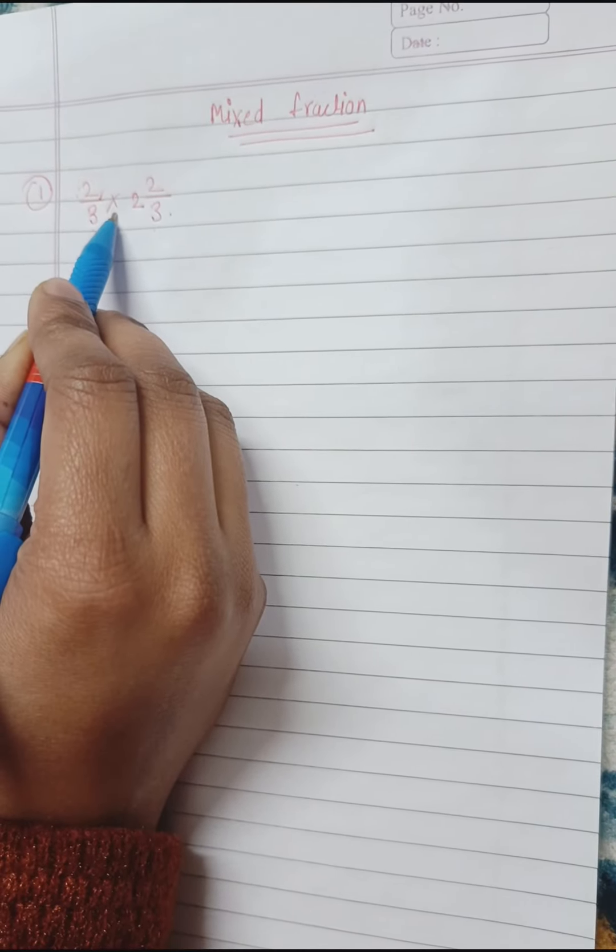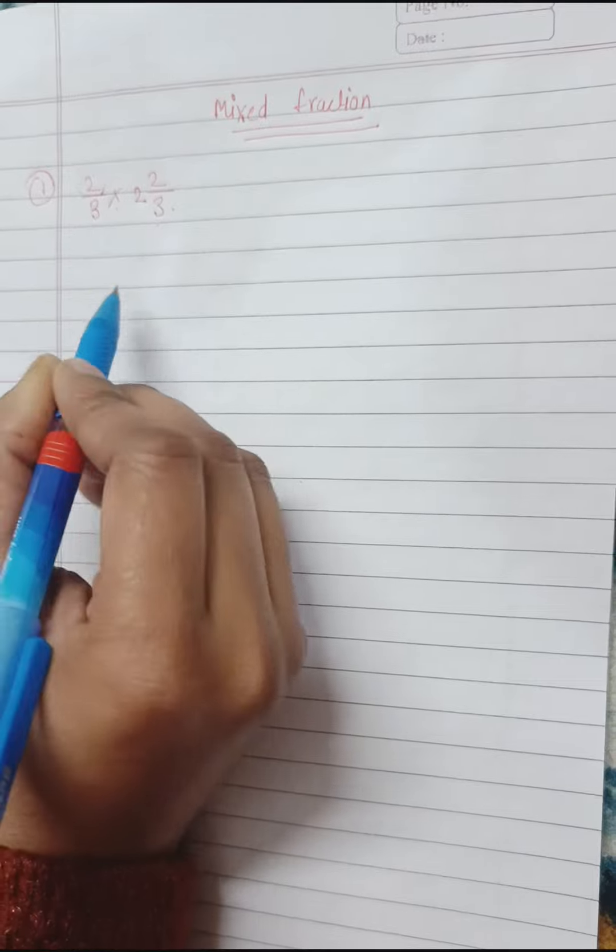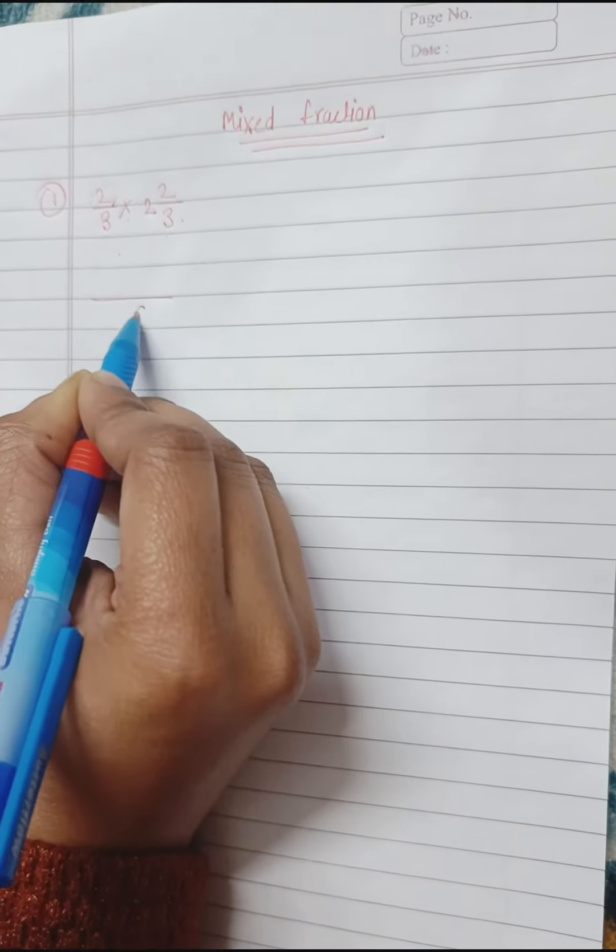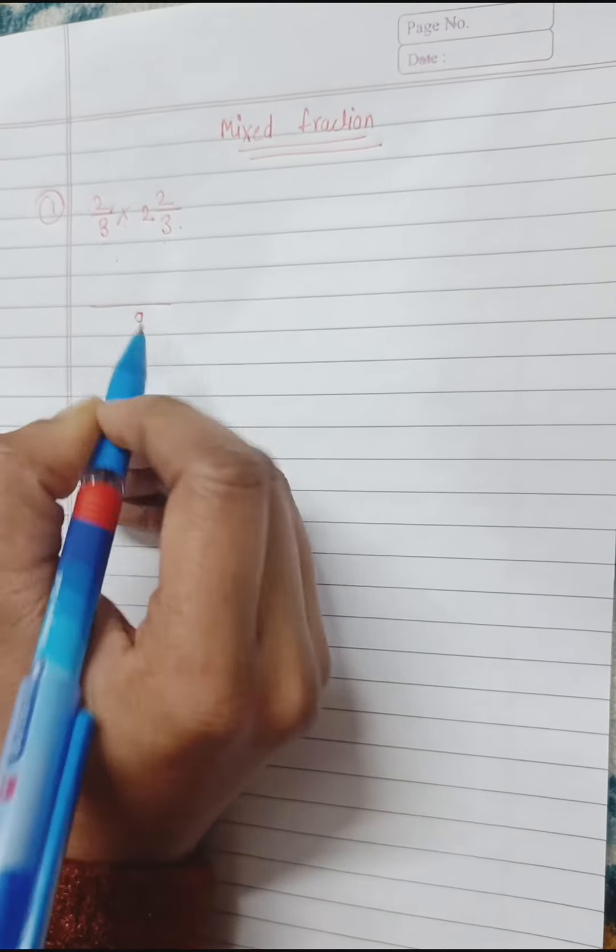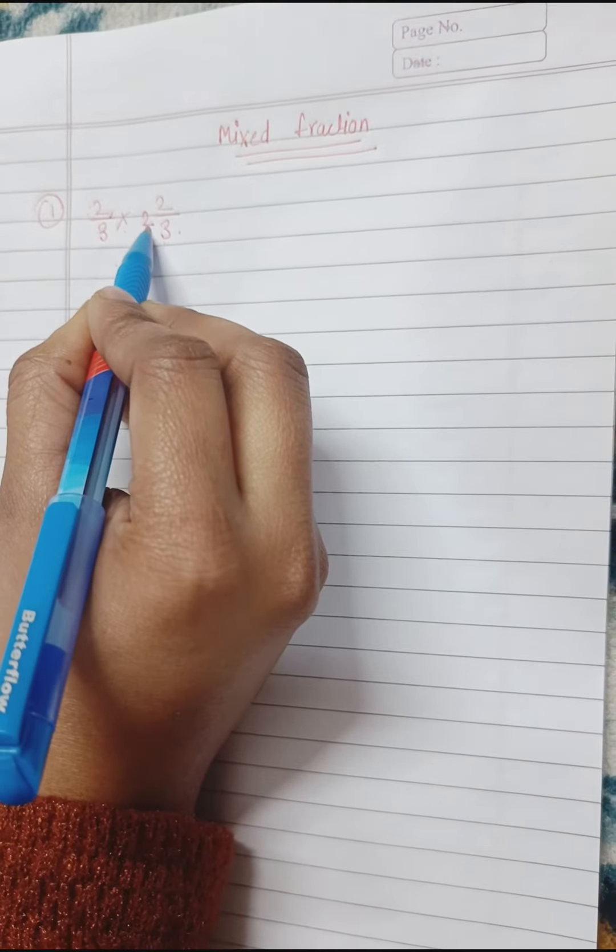Just because there is a multiple sign, we have 3 times 3, which is 9. After that, 3 times 2, it is 6.